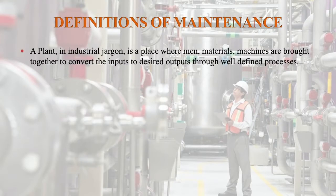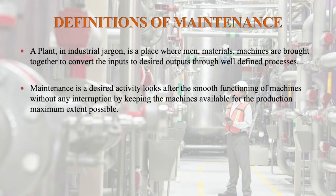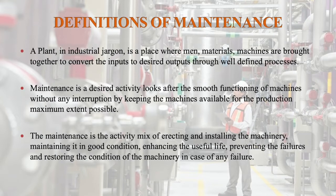Definition of maintenance. A plant in industrial jargon is a place where men, materials, and machines are brought together to convert inputs to desired outputs through well-defined processes. Maintenance is a desired activity that looks after the smooth functioning of machines without any interruption, keeping machines available for production to the maximum extent possible. Maintenance is also the activity mix of erecting and installing machinery, maintaining it in good condition, enhancing its useful life, preventing failures, and restoring the condition of machinery in case of any failures.